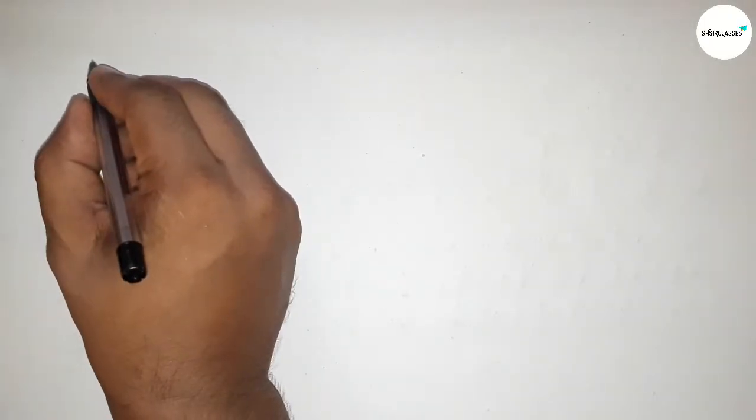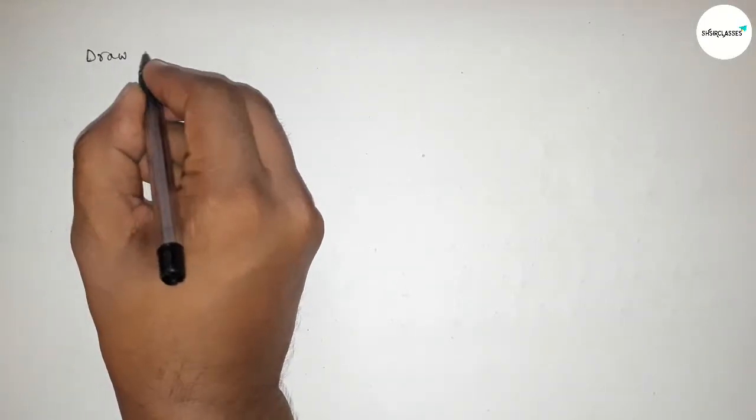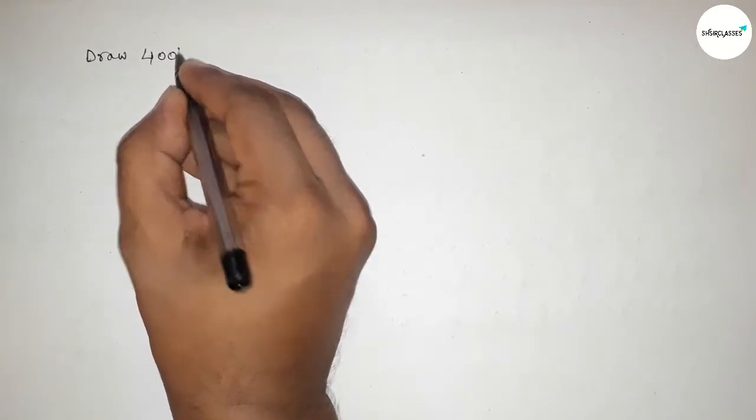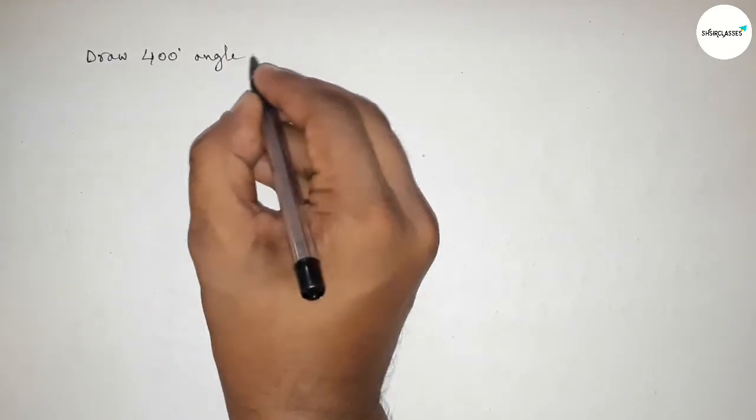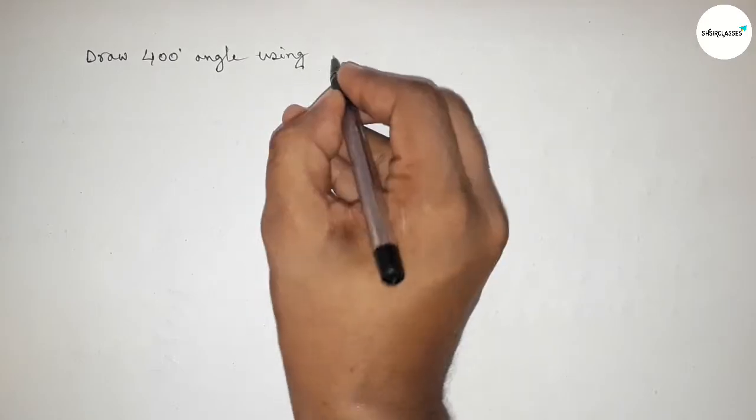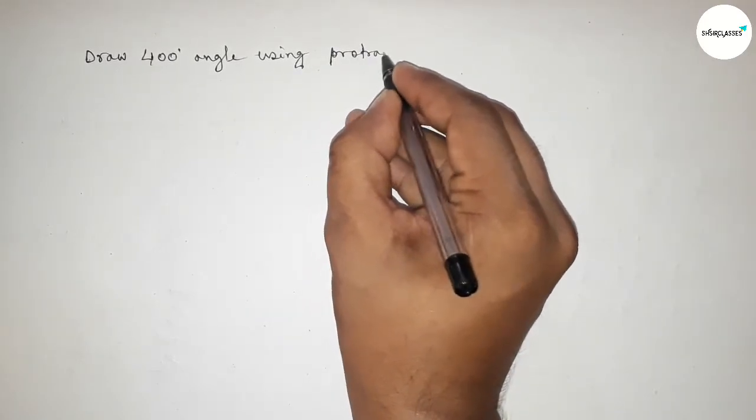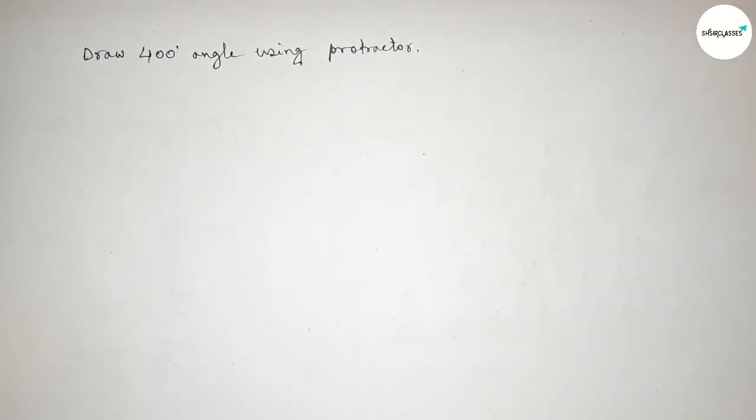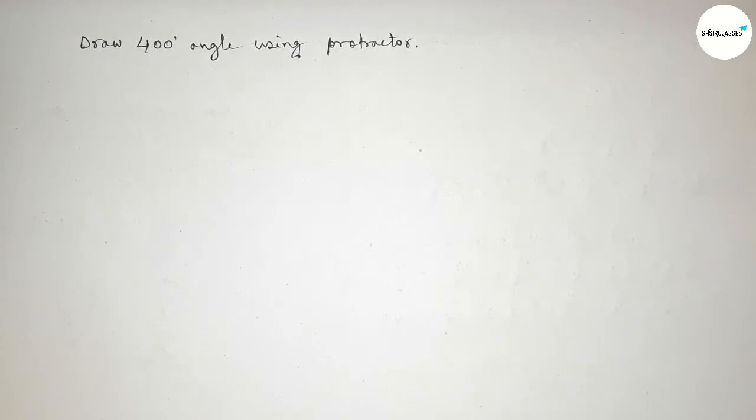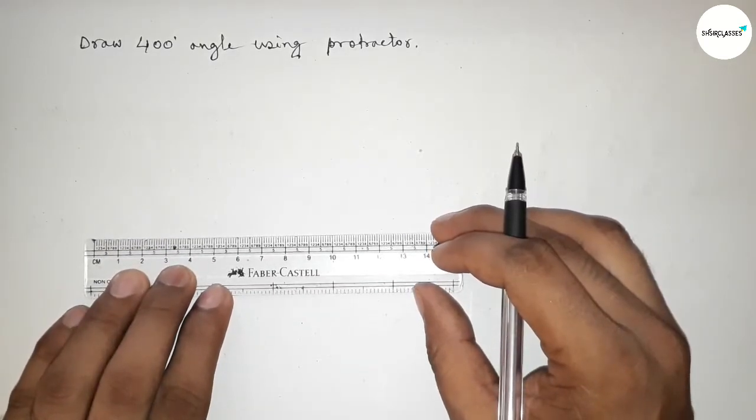Hi everyone, welcome to SI Share Classes. Today in this video we have to draw a 400 degree angle by using a protractor in an easy way. So let's start the video. First of all, we have to draw here a straight line of any length.